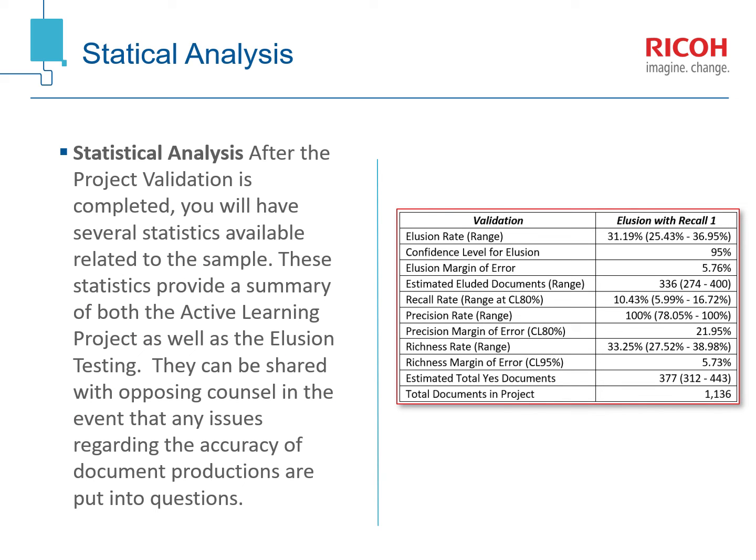The statistical analysis they provided is pretty robust. The percentages provided here in this chart are only a sampling of those that you can get. These can be used to adjust the reviewer's process or to provide to opposing counsel to show the accuracy of the project.